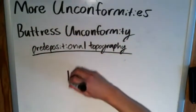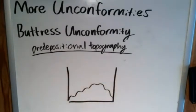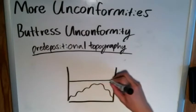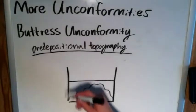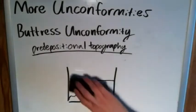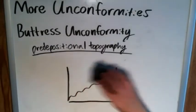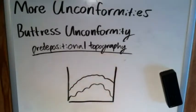What predepositional topography looks like is this: imagine a big lump of igneous rock, like a pluton, down here. When the next layer of sedimentary rock is deposited, something interesting happens. In my last video covering nonconformities, I drew a sedimentary layer on top of an igneous layer coming up flat. But this won't happen in many cases, because sedimentary rock often won't end up that uniform.